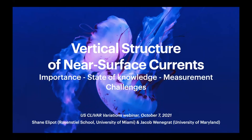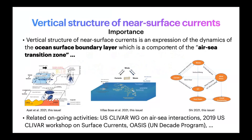Thank you very much to US CLIVAR and to the editors of the special issue of Variations for inviting me to write this mini review. I was very pleased to team up with Jacob Venegrat from the University of Maryland, who will join us in a few minutes as well. Our topic is the vertical structure of near-surface currents — important state of knowledge and measurement challenges. Near-surface currents and their vertical structure are basically an expression of the dynamics of the ocean surface boundary layer.